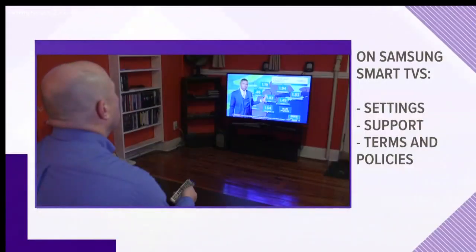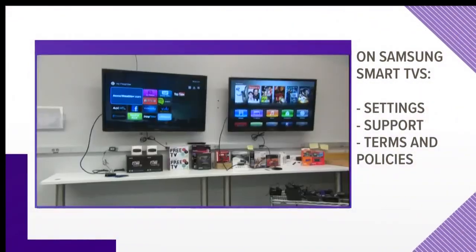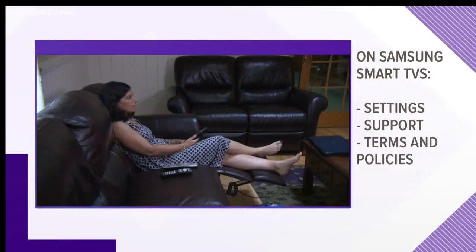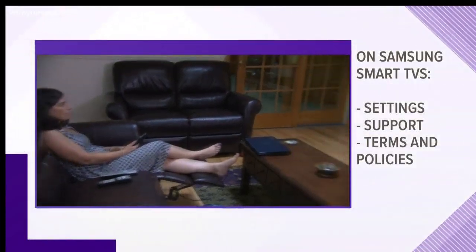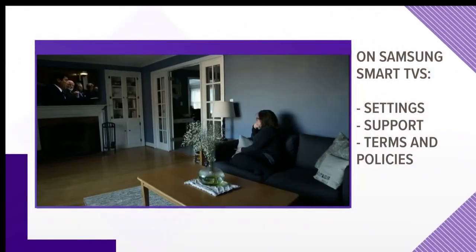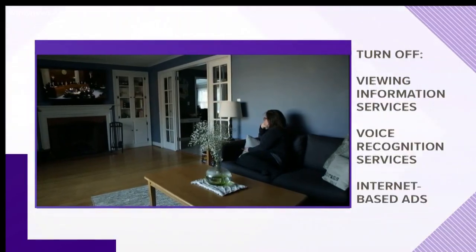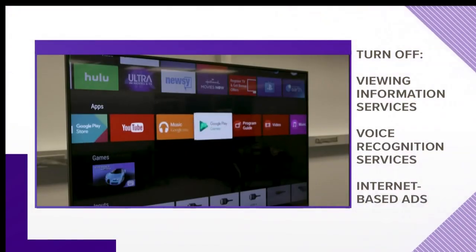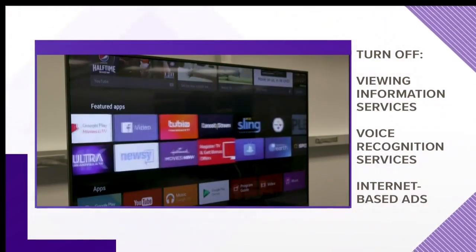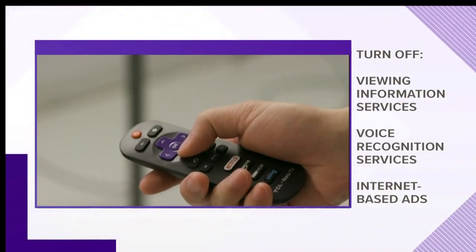If that creeps you out, you can shut it off. On a Samsung TV, for example, click the settings icon in the main menu. Look for support, then scroll down to terms and policies. Turn off viewing information services, voice recognition, and internet-based ads.